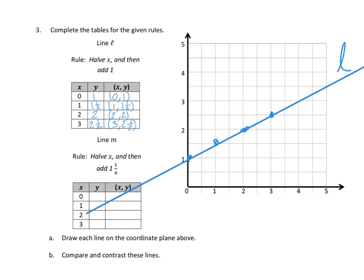So what I'm going to let you do on this problem is for you to figure out what are all the coordinates for line M. There's the rule, halve x and then add 1 and 1 fourth. And then you'll draw your line M in the coordinate plane, just like I've drawn L. And then you need to compare and contrast these lines to see what you can figure out based on that.